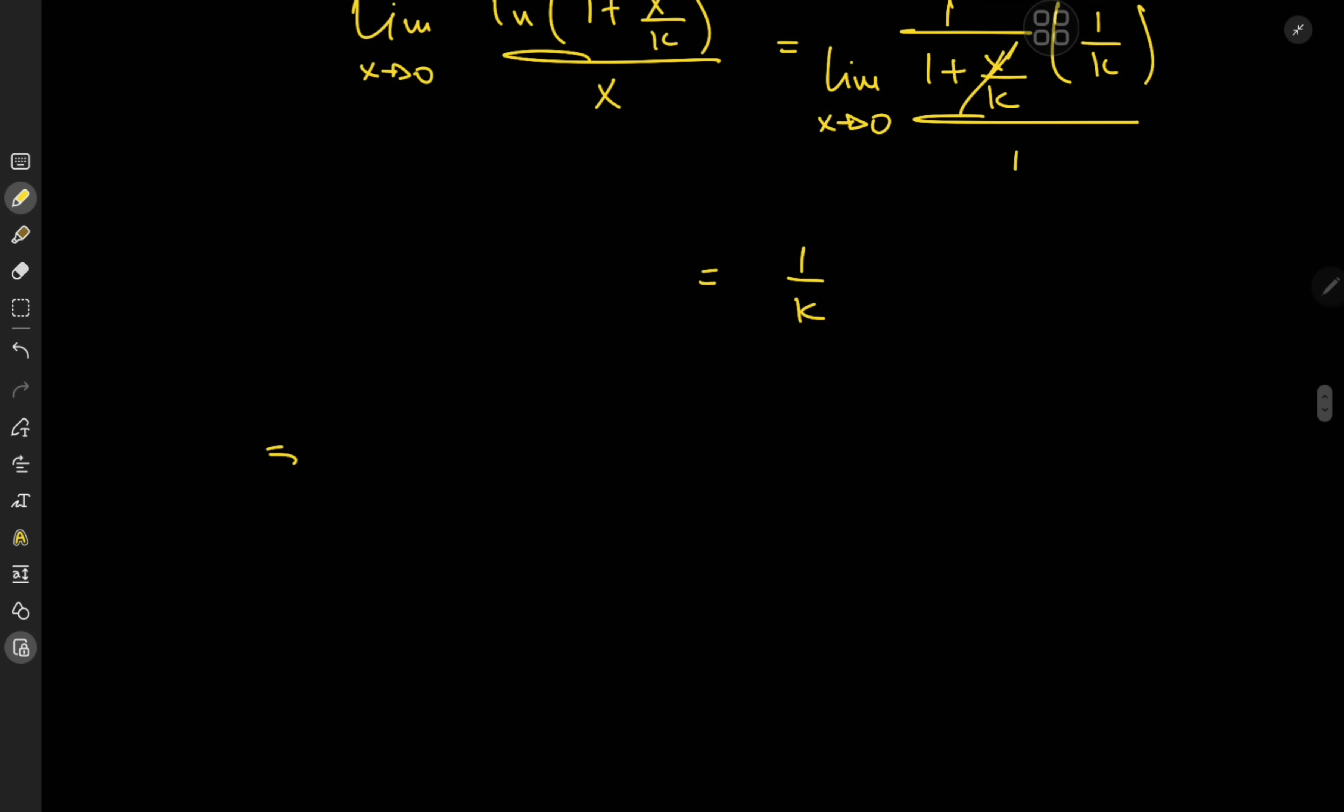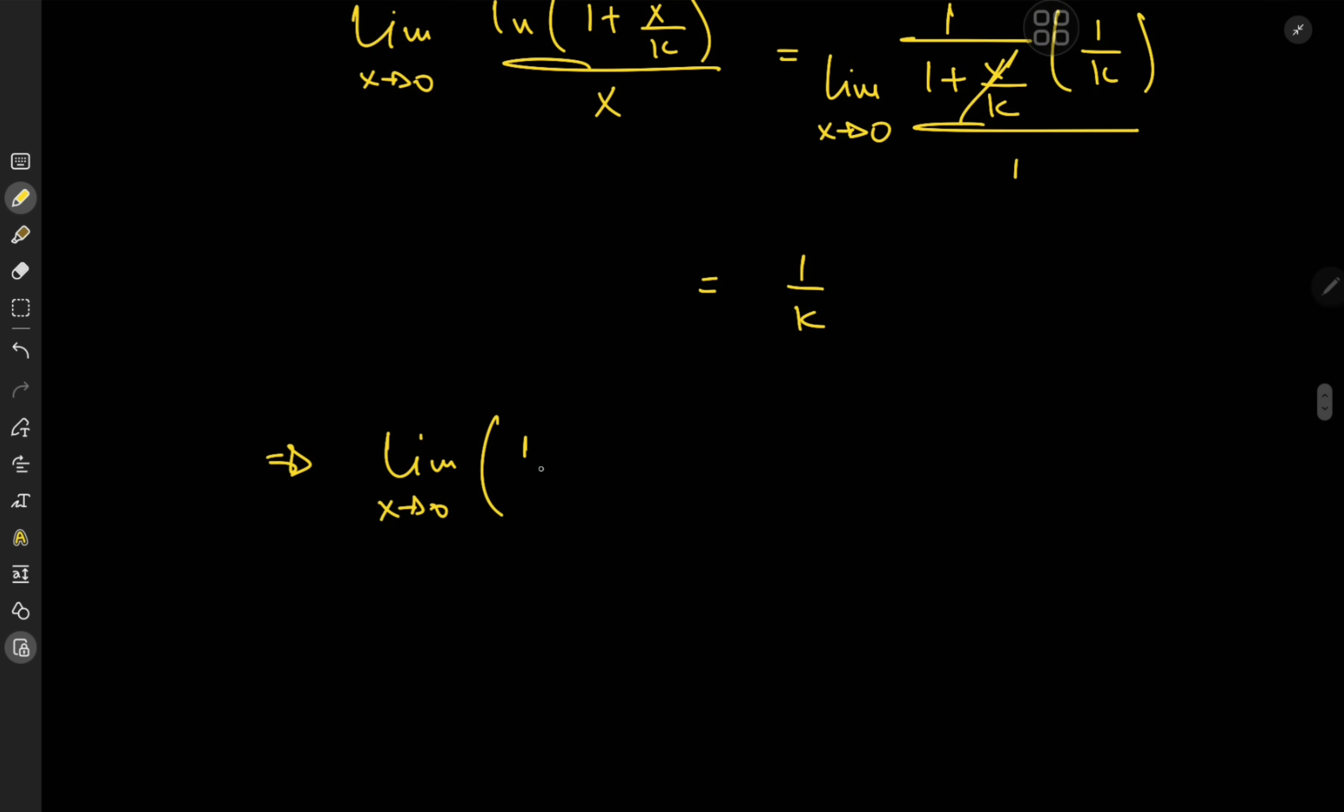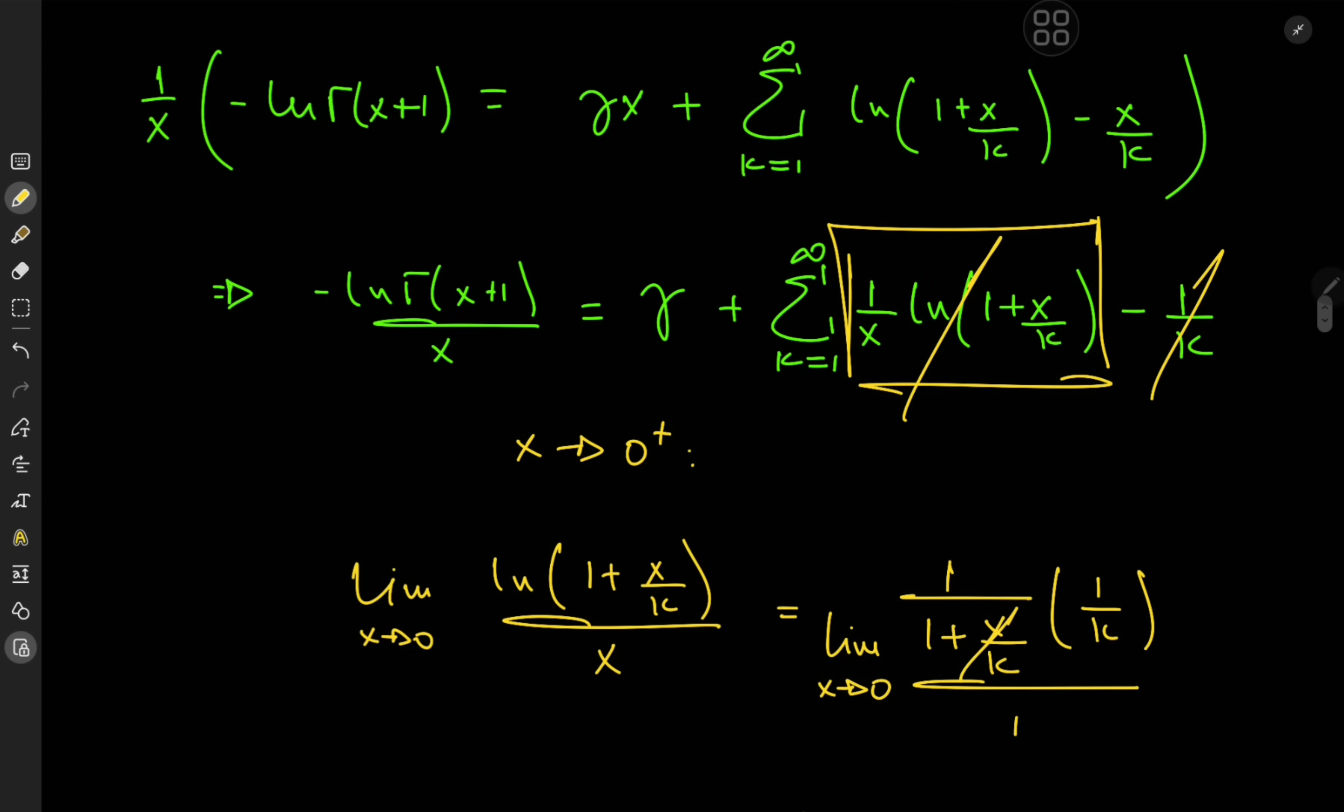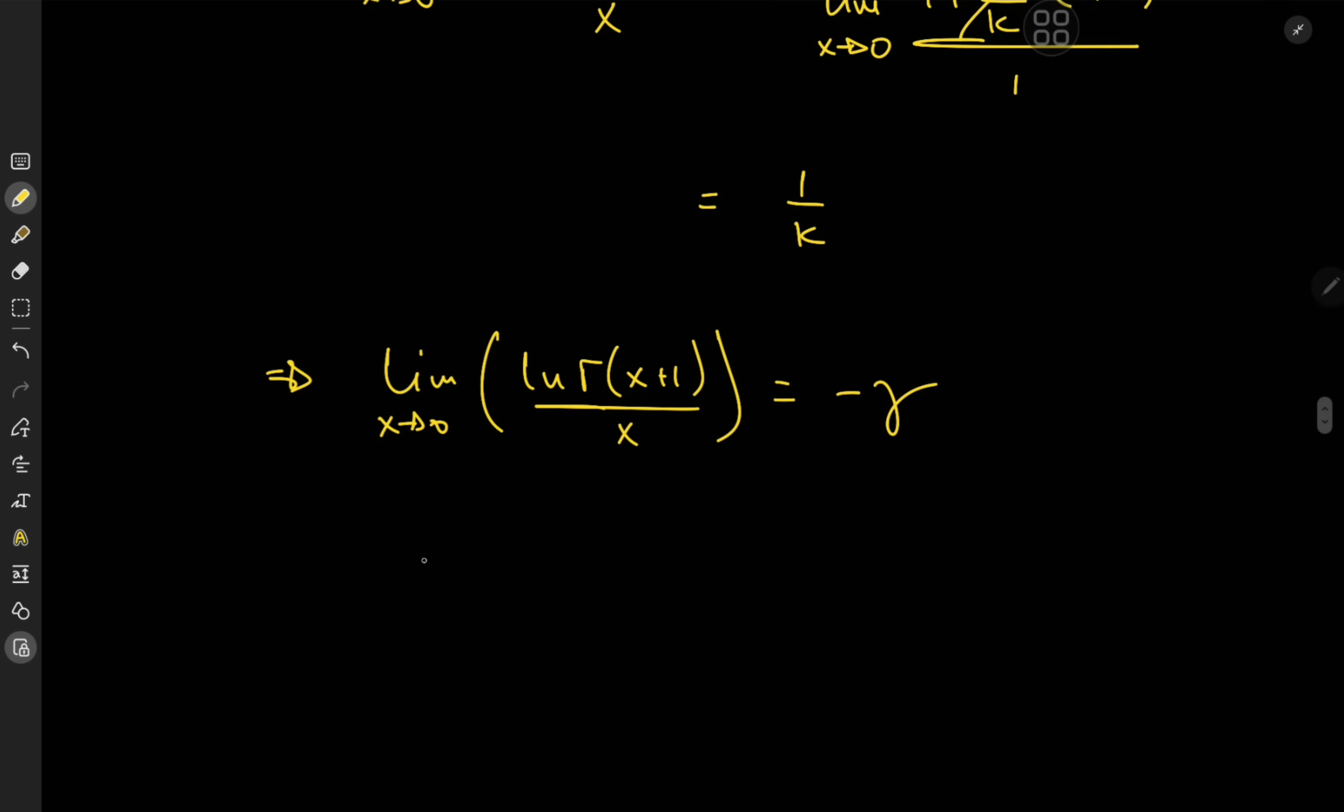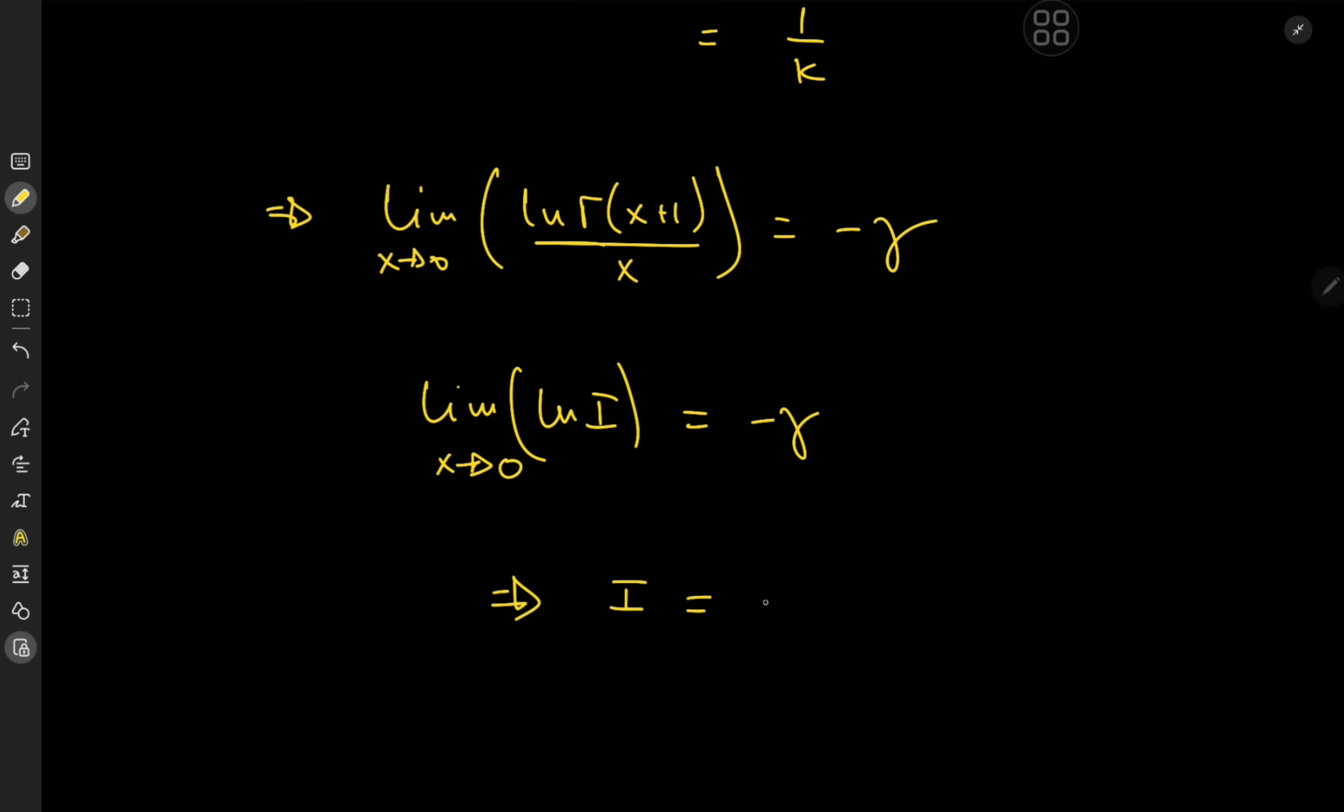So this implies that the limit as x approaches 0, you know what I'm just gonna get rid of the negative sign here by expanding by negative 1. So the limit of log gamma x plus 1 over x as x approaches 0 equals we're left with negative Euler-Mascheroni constant and just a bunch of 0s over here. So that means we have the limit of log i as x approaches 0, and we're of course interested in i itself. So this implies that i here which is the limit as x approaches 0 of x factorial to the 1 over x equals e to the negative Euler-Mascheroni constant, which is absolutely gorgeous.